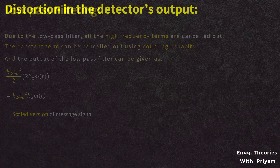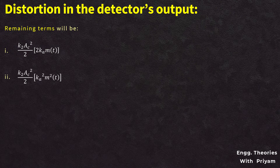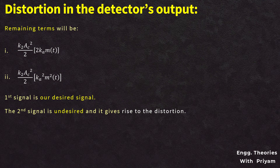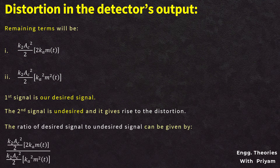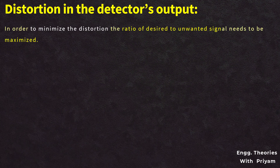Now let us understand how distortion takes place in the detector's output. After passing through the low-pass filter and coupling capacitor, the remaining terms are K2·AC²/2 × 2·Ka·m(T) (desired signal) and K2·AC²/2 × Ka²·m²(T) (unwanted signal causing distortion). The ratio of the desired signal to the unwanted signal is: [K2·AC²/2 × 2·Ka·m(T)] / [K2·AC²/2 × Ka²·m²(T)] = 2 / (Ka·m(T)).